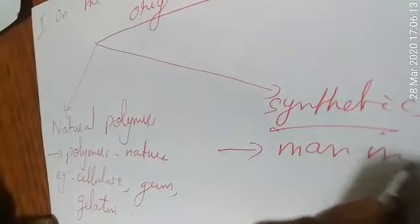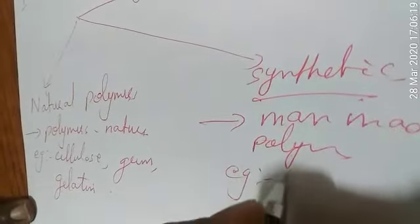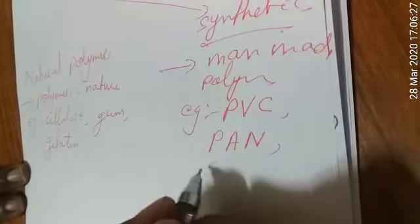The second group is synthetic or artificial polymers — polymers which can be synthesized in the lab, that is man-made polymers. Examples include PVC (polyvinyl chloride), PAN (polyacrylonitrile), and nylon 6.